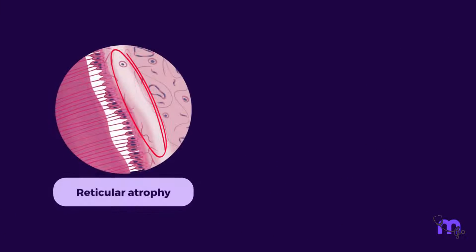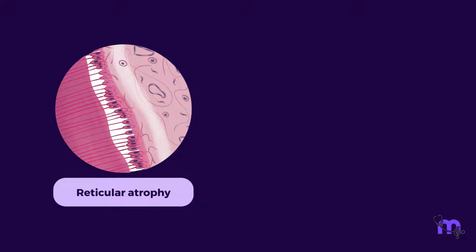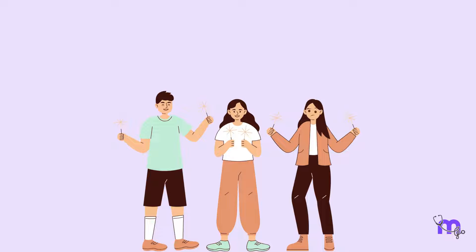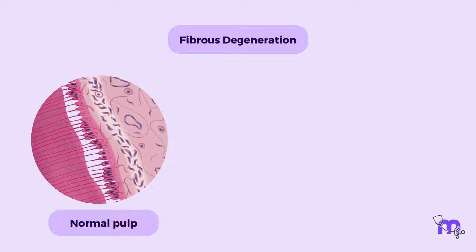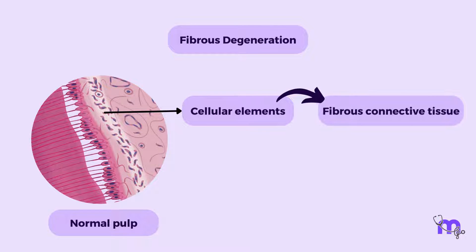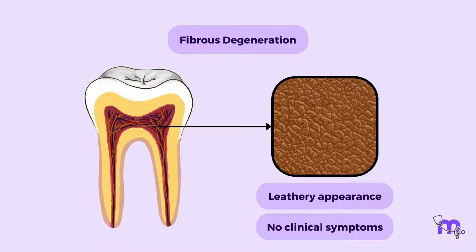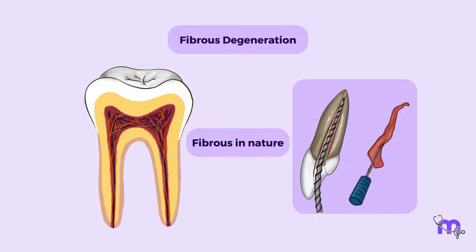Do you know that reticular atrophy and atrophic degeneration are not the same? Reticular atrophy is an artifact produced by the delay of the fixative agent in reaching the pulp and is not a pathology like atrophic degeneration. It is finally time to discuss the ambivert sibling — fibrous degeneration. It is characterized by replacing the cellular elements with fibrous connective tissue. This pulp has a characteristic leathery appearance; however, it causes no distinguishing symptoms to aid in its clinical diagnosis. This fibrous nature is appreciated when the pulp is extirpated during root canal treatment.